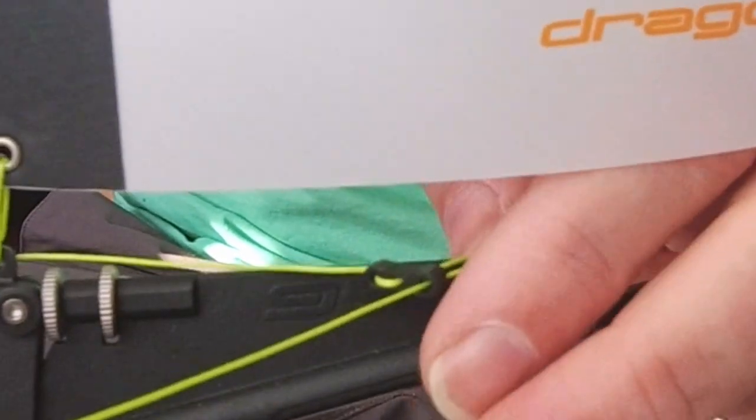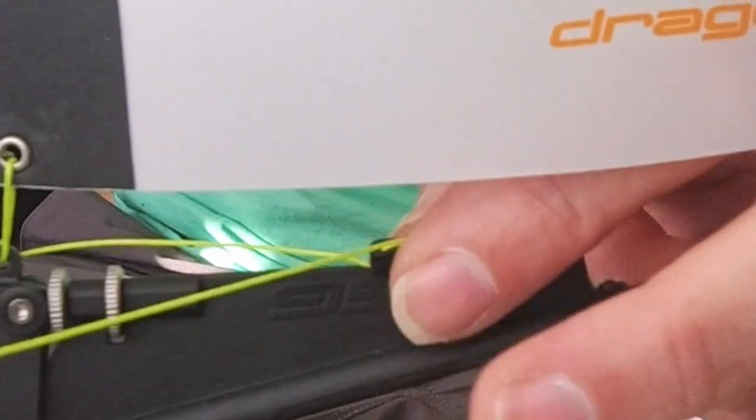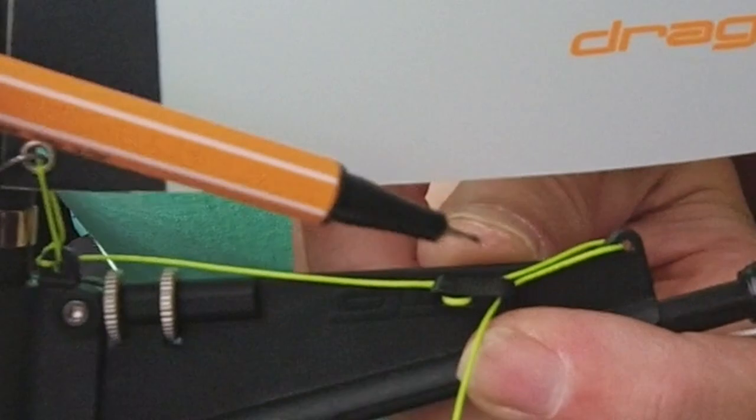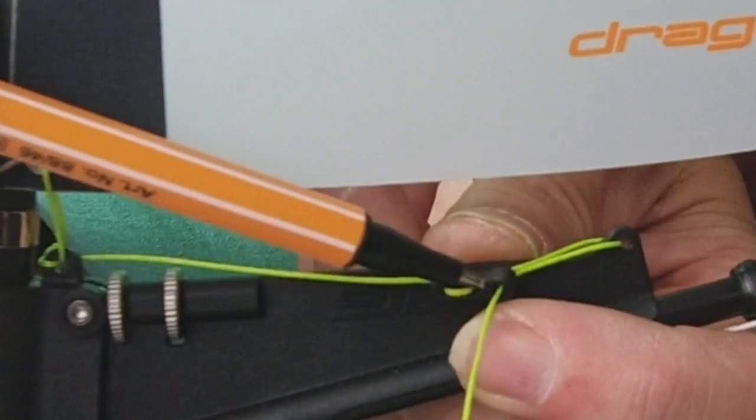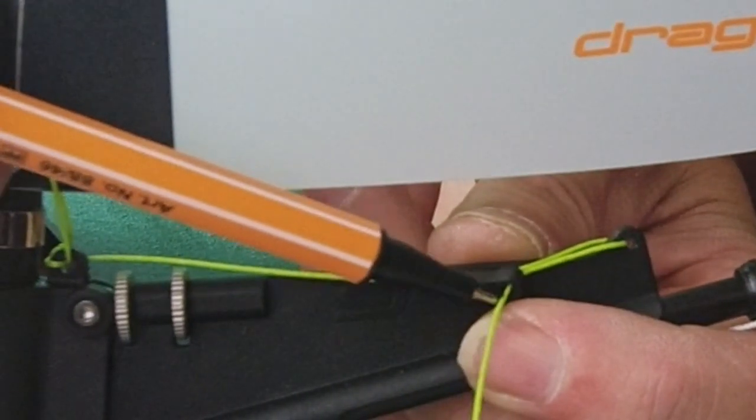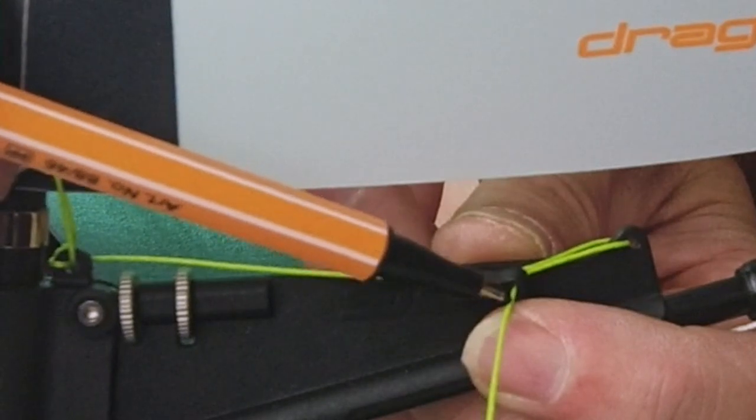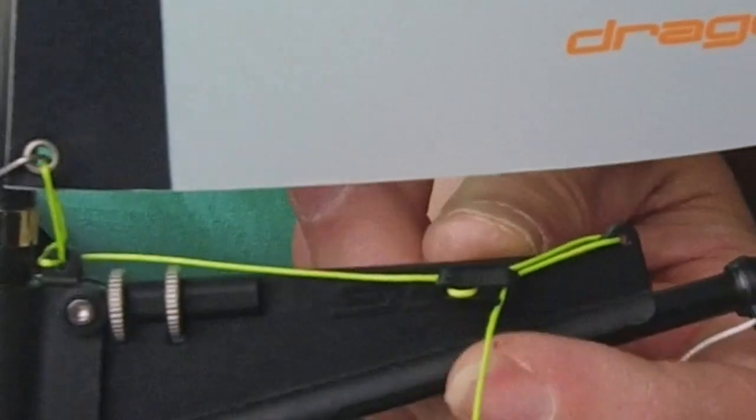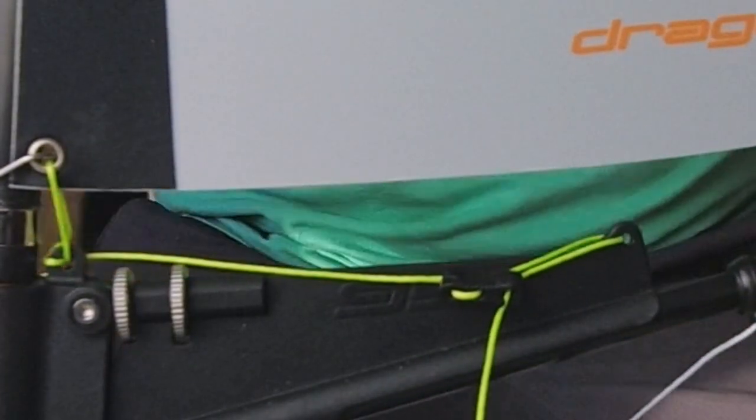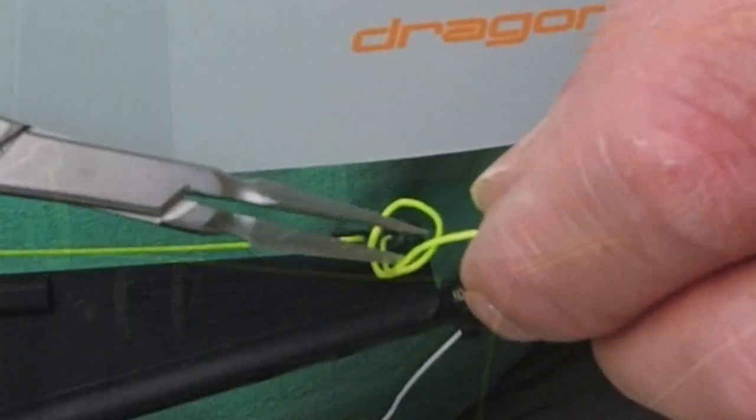Pull the dyneema until all the slack is removed and the bousy block is about three quarters distance from the first eye in the bearing housing to the eye in the compression strut. With a marker pen, put a mark on the dyneema where it exits the bousy block, and this is where you need to tie a stopper knot.